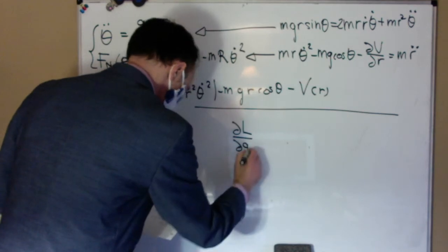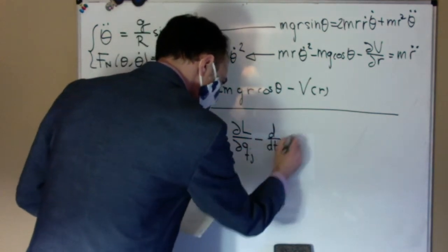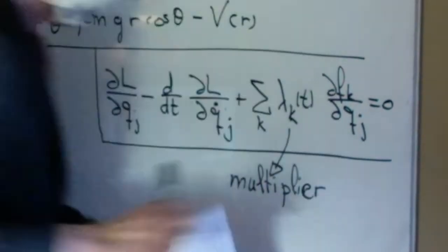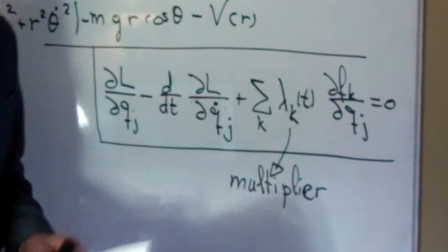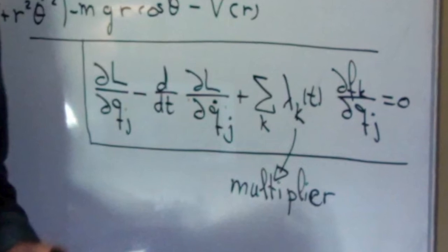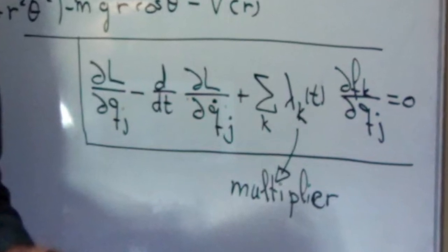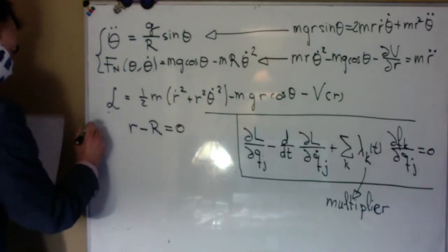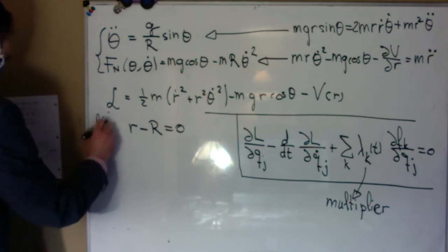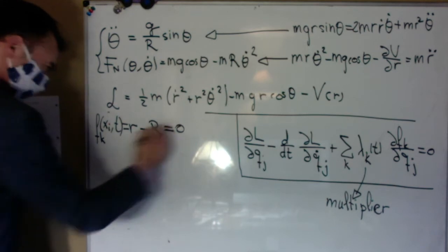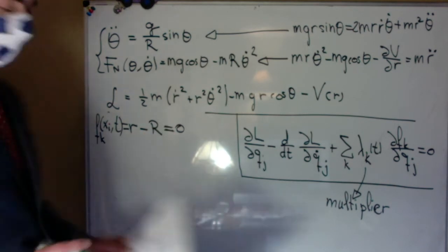This method implies writing Lagrange equations in this new form. The first two terms are the Lagrange equations we already know. And the third term includes this lambda times the derivative of f with respect to the coordinate q. f is a constraint equation that needs to be zero. In this problem, it can be written as r minus R equal to zero. Lambda is the force of constraint related to that potential. This method automatically will give us the force related to each of the constraints in the system.